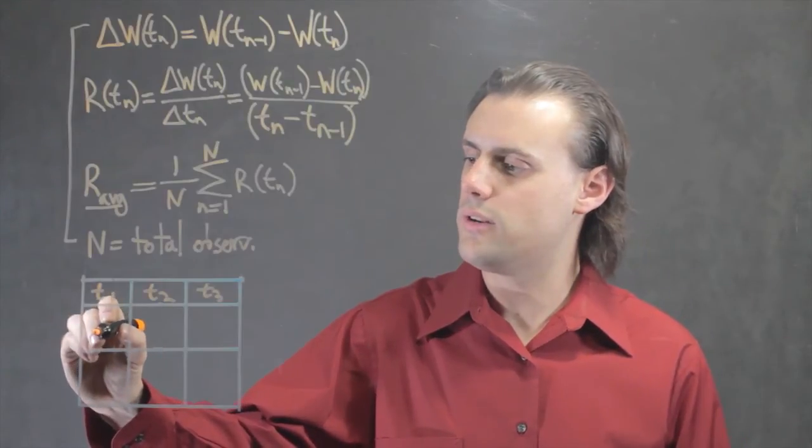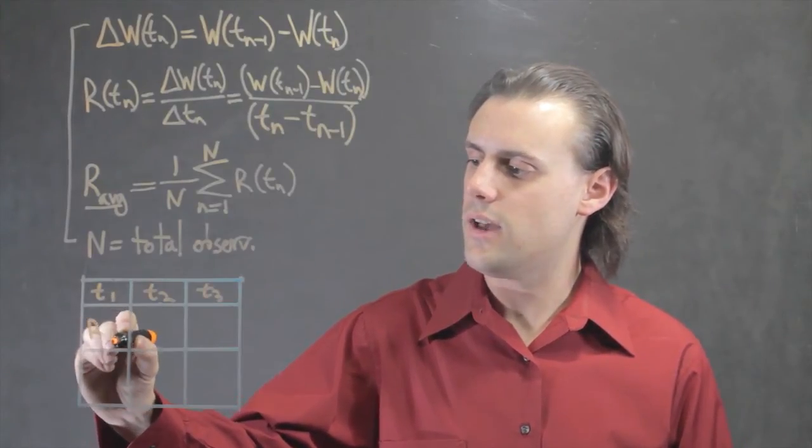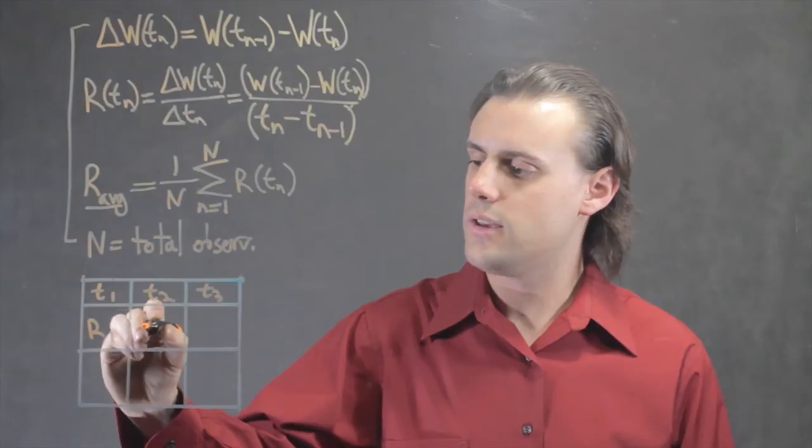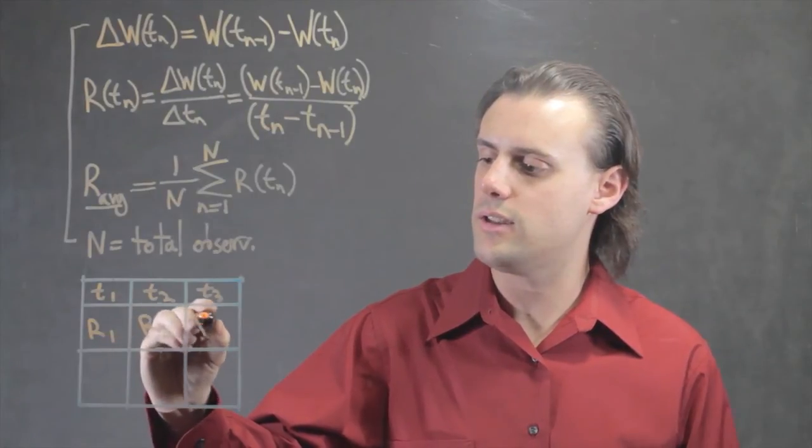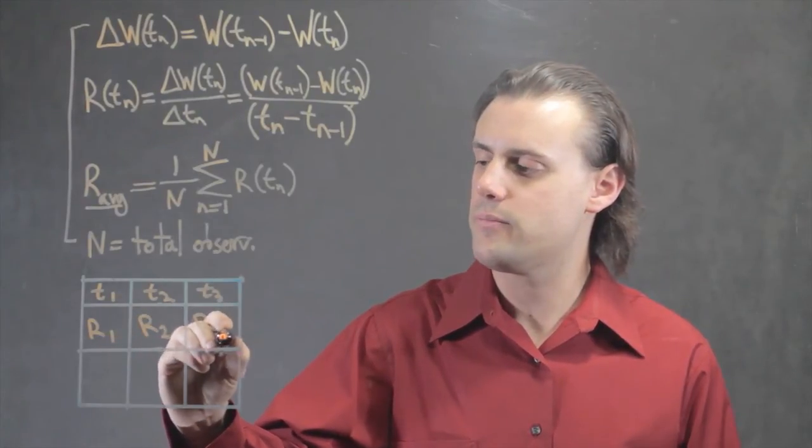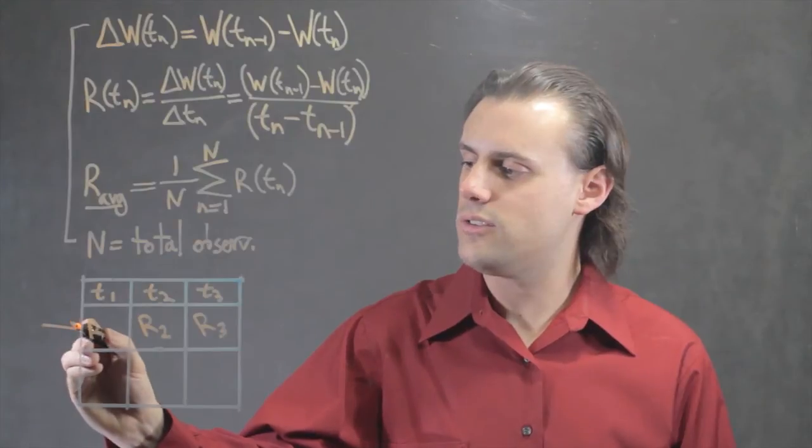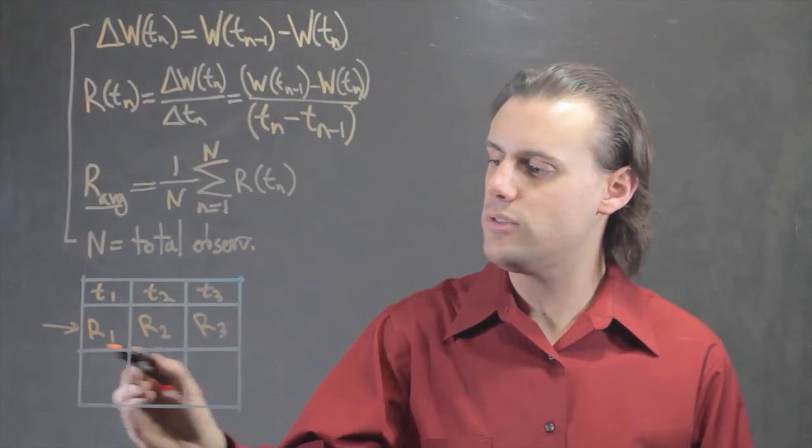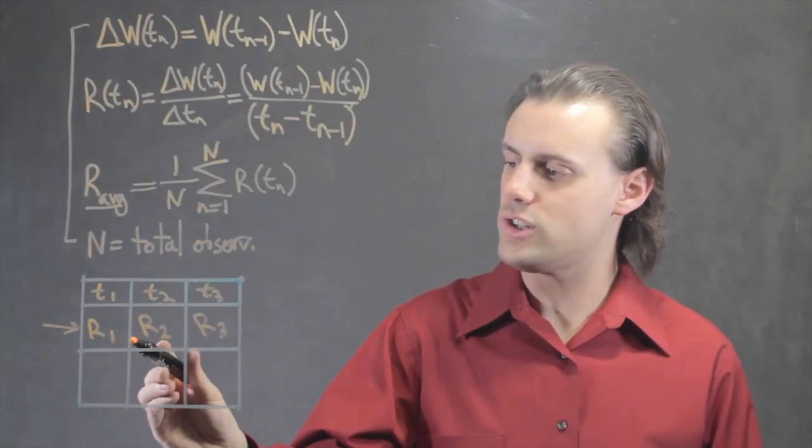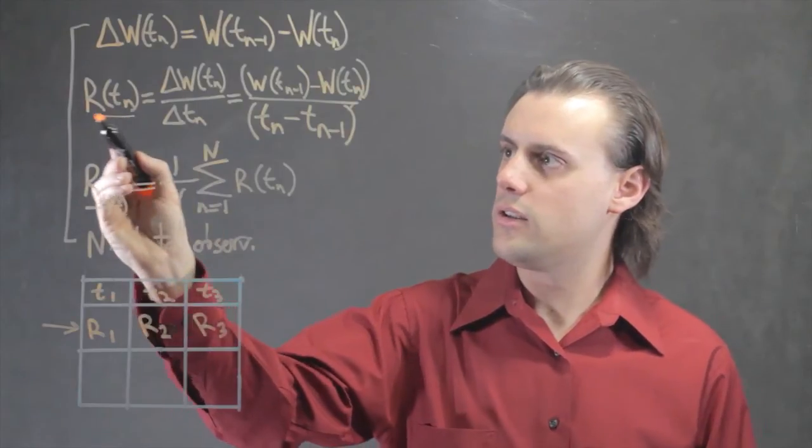Here I would put the rate at time 1, here the rate at time 2, and here the rate at time 3. So, this second row would be used for the information R of T.